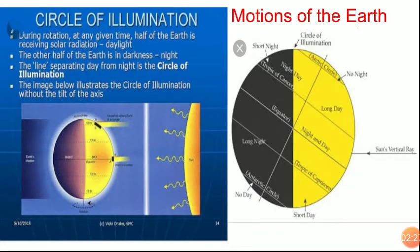Circle of illumination is a line or circle that separates the day from night. Don't get confused with the axis. It is just a separating line as seen in the second picture.